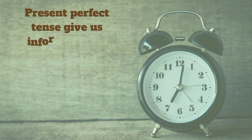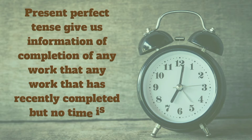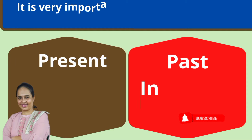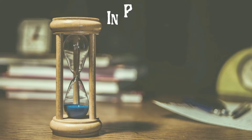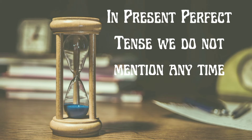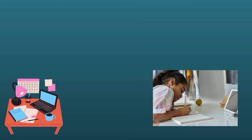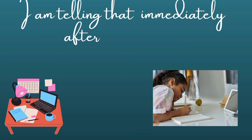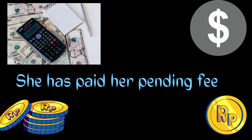Present perfect tense gives us information about the completion of any work that has recently completed but no time is mentioned. For example: 'I have finished my work' — I'm telling that immediately after finishing my work. Second example: 'She has paid her pending fee' — no time is mentioned there.